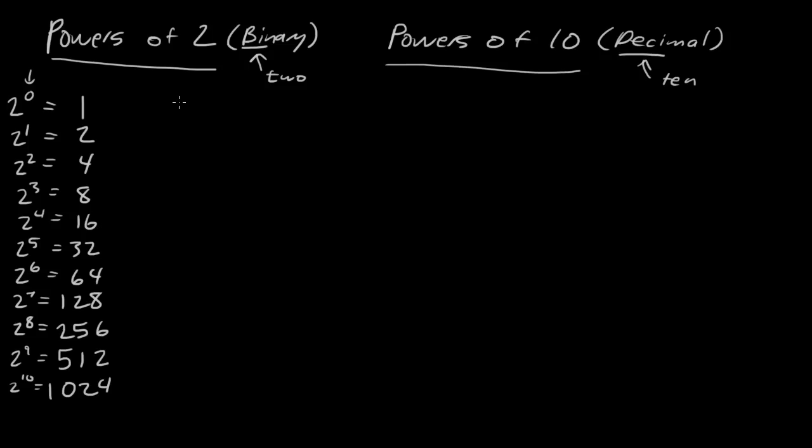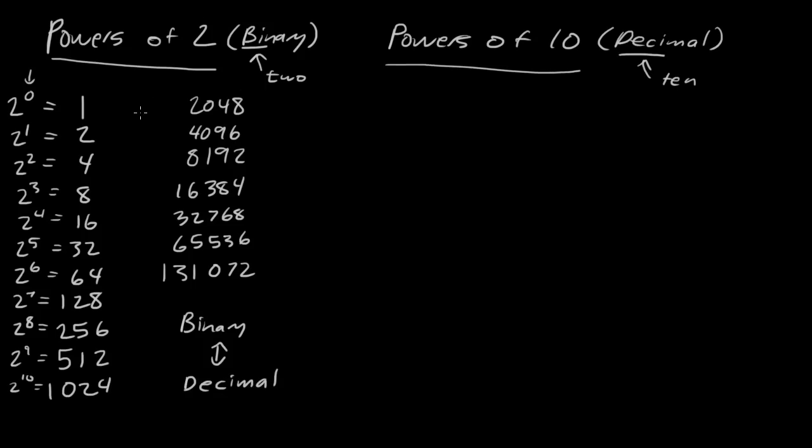We might as well talk about some more powers of 2, so let's just keep going. We have not just 1,024, but we also have 2,048. We also have 4,096, 8,192, 16,384, 32,768, 65,536, and then 131,072. And beyond that, I'll just leave it up to you to figure that one out. It's good to know powers of 2, and the reason why is because you need to know powers of 2 in order to convert between binary and decimal.